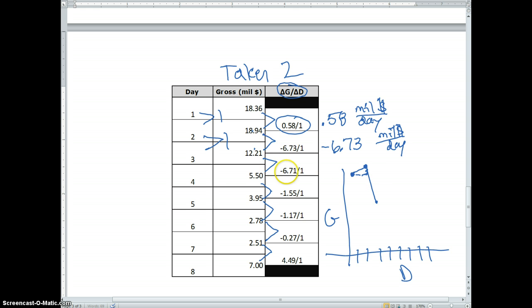It's a big drop. And then I have another big drop of 6.71 over the next day. And then a drop of 1.55, which is a lot less actually. And then a drop of 1.17, which is again a little bit less. And then a drop of 0.27, which is just a little bit more. And then suddenly, maybe it's the weekend again, and we get a big increase in the revenues.